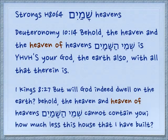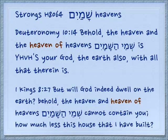We have this interchangeable translation, whether it's plural or singular. Deuteronomy 10:14: Behold, the heaven and the heaven of heavens — shemay hashemayim. Shemay and shemayim are the same word, just in the construct form where you have two nouns leaning one on the other. Shemay hashemayim is Yehovah's your God, the earth also with all that therein is. So there's a singular attached to a plural, but it's just the same word.